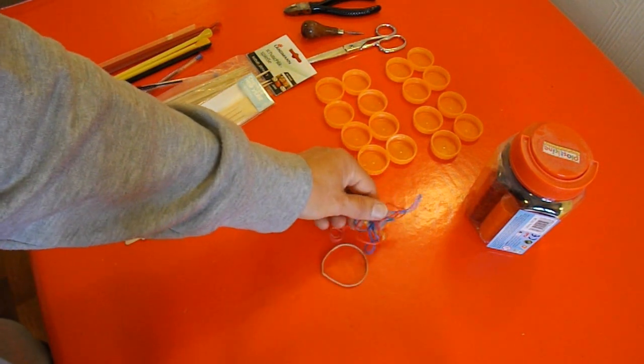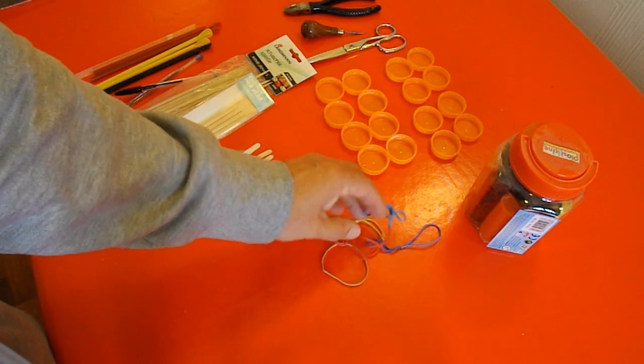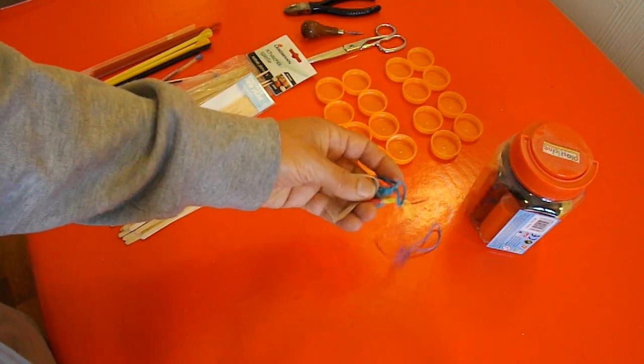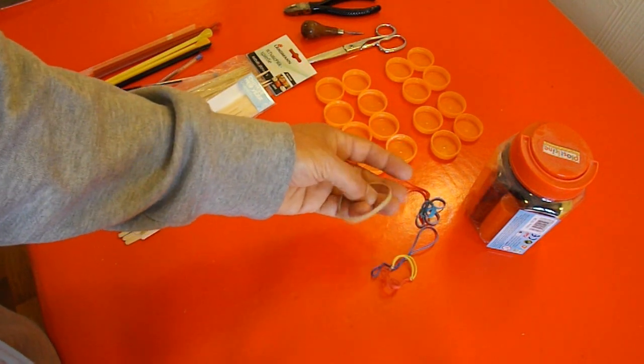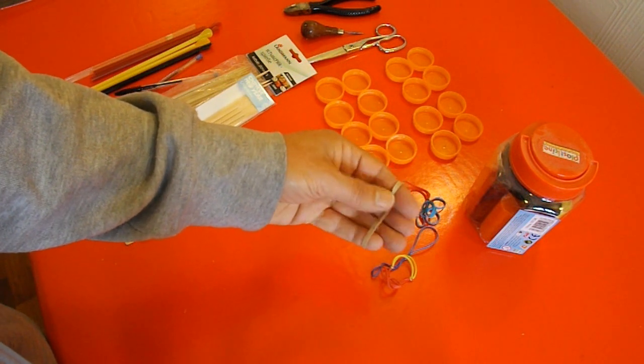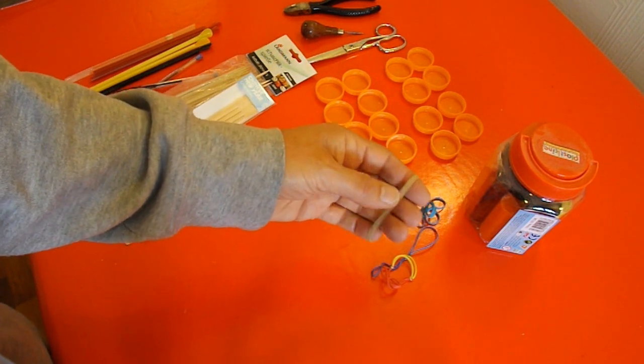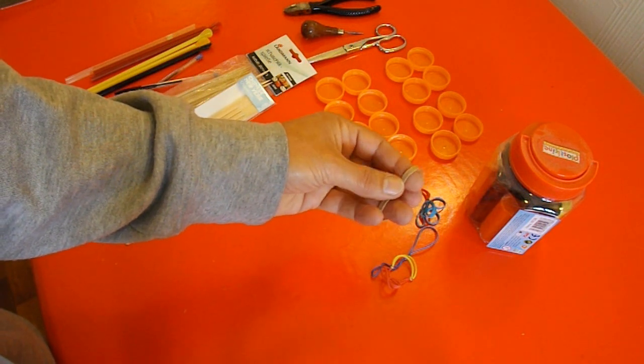Rubber bands. People ask me if they can make a car using one rubber band, or two rubber bands, or three. The point is, there's hundreds of different types of rubber bands, so just asking for a car using one rubber band isn't very helpful. A lot of people ask for number 64 rubber band. That's a popular size.